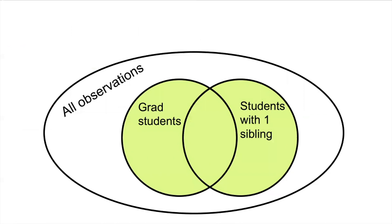Let's make things more complicated, because often we're not filtering based on only one variable but rather based on combinations of variables. Here we have our larger circle of all observations, then the smaller circle of grad students, and now we've added another group — students who have one sibling. These two circles overlap because there are some people who are both grad students and have one sibling, some who are only grad students, and some who have one sibling but are not grad students.